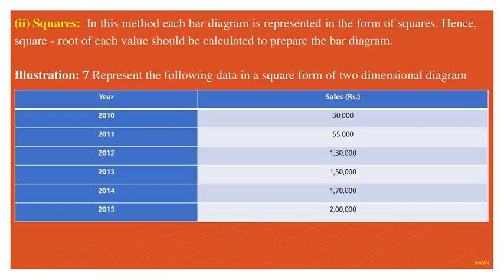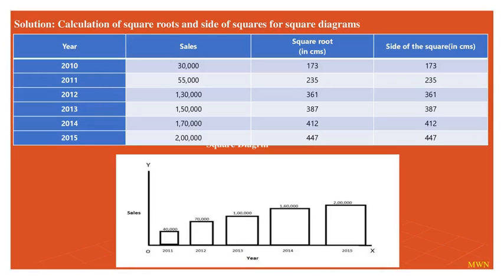Squares: all sides are equal. The variable should be converted by taking the square root. Sales have been given, and the sales should be converted by taking the square root to represent size. In this example, the root has been taken, and bars with the same height and same breadth are created. You can determine the growth from the size.